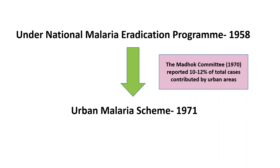In 1970, the health committee known as the MADOK committee reported that 10 to 12 percent of total cases in India were contributed by urban areas. Since the eradication program did not cater to urban cases, the Urban Malaria Scheme was launched in 1971.